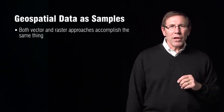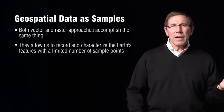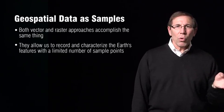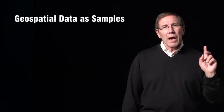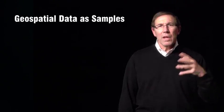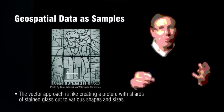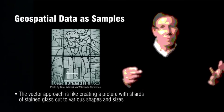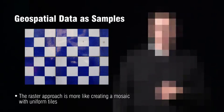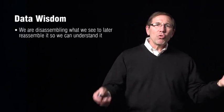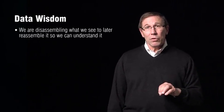What's the bottom line? Both raster and vector approaches accomplish the same thing. We are collecting samples about the Earth's surface. They allow us to record and characterize the Earth's features with a limited number of samples, since we can't sample everything. The vector approach is like a stained glass window, where lots of shards of glass are brought together to cover the entire surface. The raster approach is like a tile floor — very regular pieces of tile in a uniform pattern to cover the entire area. If you think about what we've done with both approaches, we've sampled, we've looked at the Earth's surface and disassembled it. In order to use this data, we need to reassemble it the way we want to. In the process of disassembling the Earth, we've also simplified.